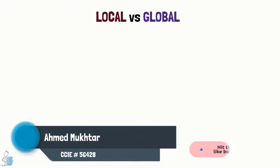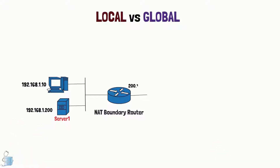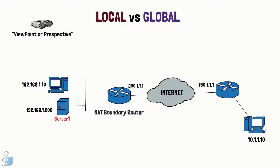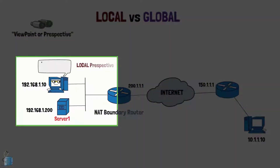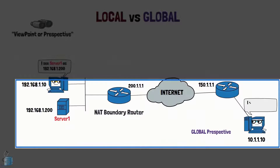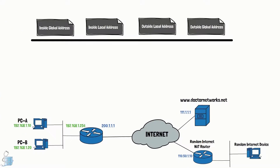The terms local and global generally refer to public and private IP addresses respectively, but with Cisco's NAT terms they refer to the viewpoint or perspective of the device when it looks at an IP address. For example, a local device sitting inside your organization has its own perspective of looking at an IP address, while a device outside views an IP address from their own perspective. These terms are displayed on the Cisco NAT boundary router as an IP packet traverses it, viewable with the show ip nat translations command.